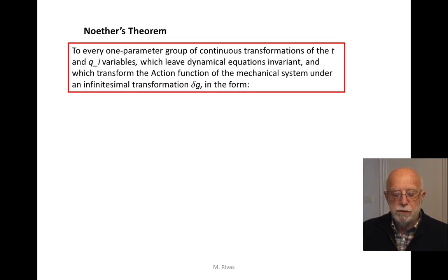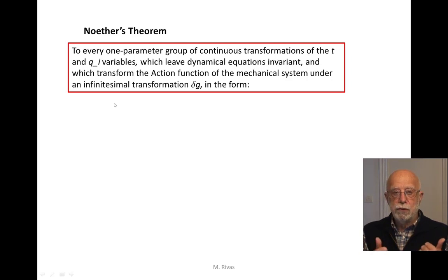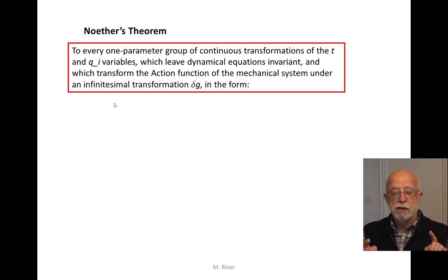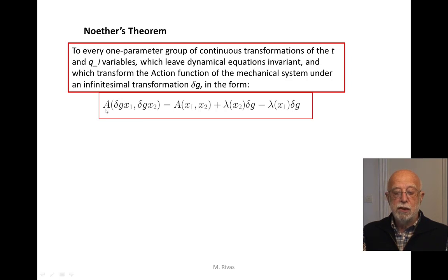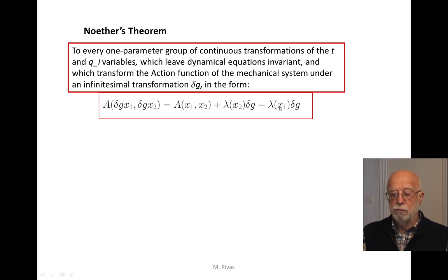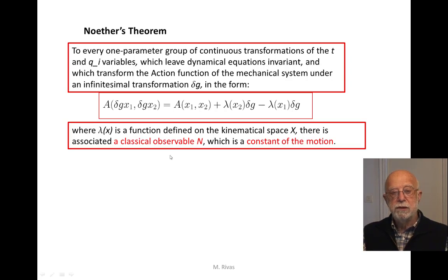Now, let us state Noether's theorem. It is formulated as follows: to every one-parameter group of continuous transformations of the variables t and q, which can be extended to the remaining variables, which leave dynamical equations invariant, and which transform the action function under an infinitesimal transformation of parameter delta g — the action in the transformed initial and final points takes the same form as the initial and final action, plus some function lambda of the point times the group parameter, minus the same function lambda times the parameter.